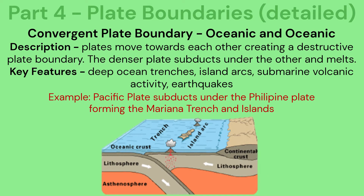Convergent plate boundary — oceanic and oceanic: two plates move towards each other creating a destructive plate boundary. The denser plate subducts under the other and melts. Key features include deep ocean trenches, island arcs, submarine volcanic activity and earthquakes.